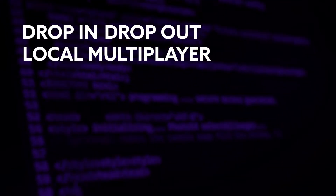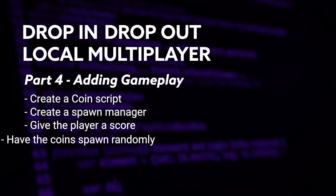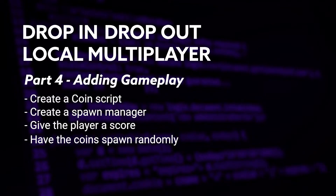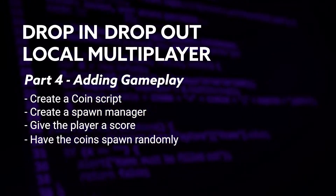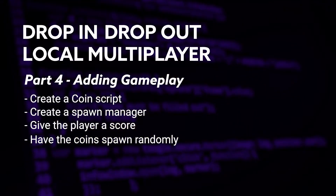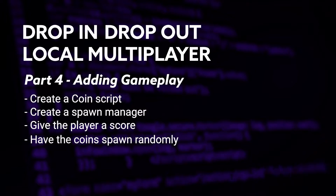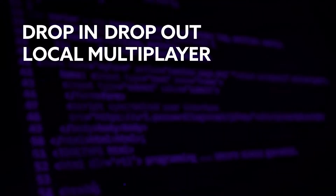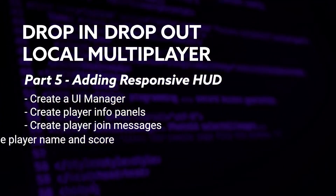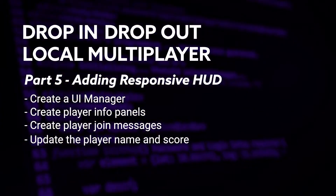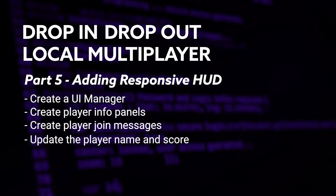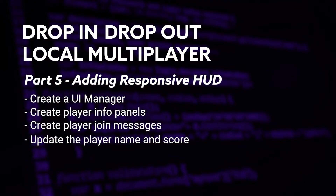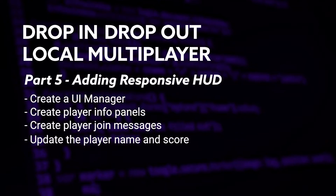In part 4, we're going to add some gameplay. We're going to create a coin script, a spawn manager, give the player a score, and then have the coins spawn randomly. Because without gameplay, having a HUD is kind of irrelevant. So in part 5 we're going to add a responsive HUD — we're going to create a UI manager, create the player info panels and player join messages, and then update those panels and messages with the player name and their score.